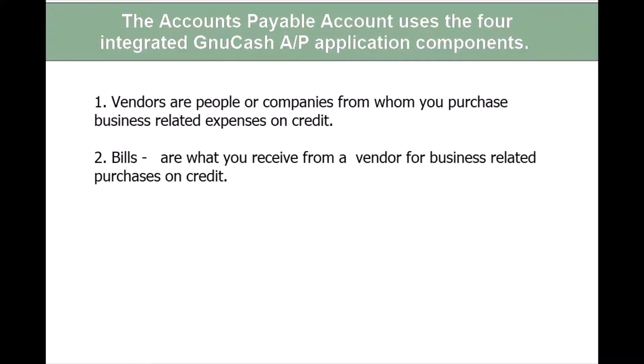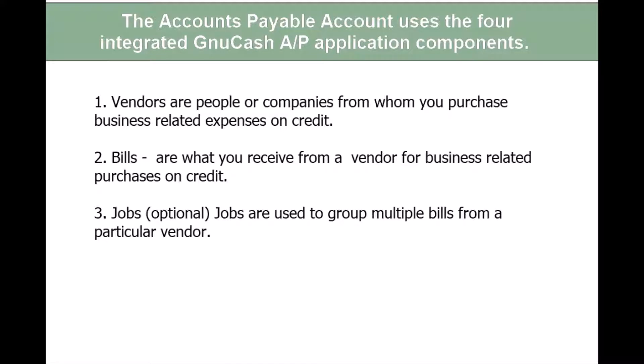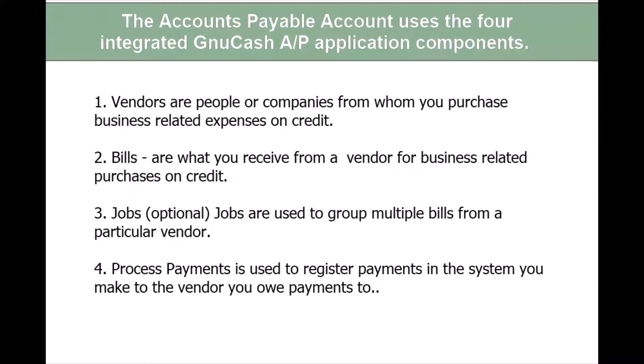Number two: bills are what you receive from a vendor for business-related purchases on credit. Number three: jobs, which are used to group multiple bills from a particular vendor. Since jobs is an optional feature, I'm not going to be focusing on jobs in this tutorial. I will be focusing on the basics of using the accounts payable feature. The fourth component is process payments, which is used to register payments you make to the vendor you owe payments to.